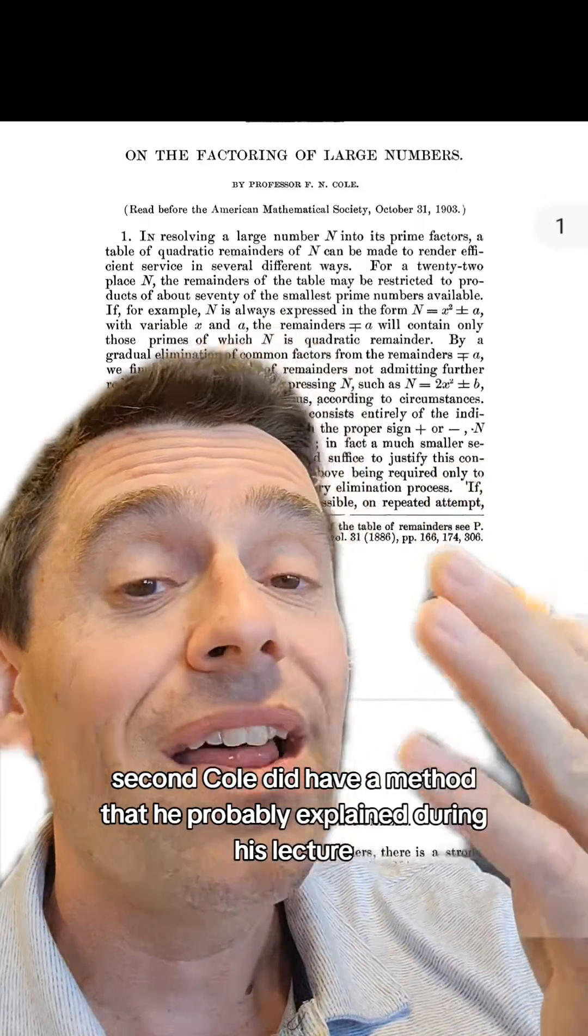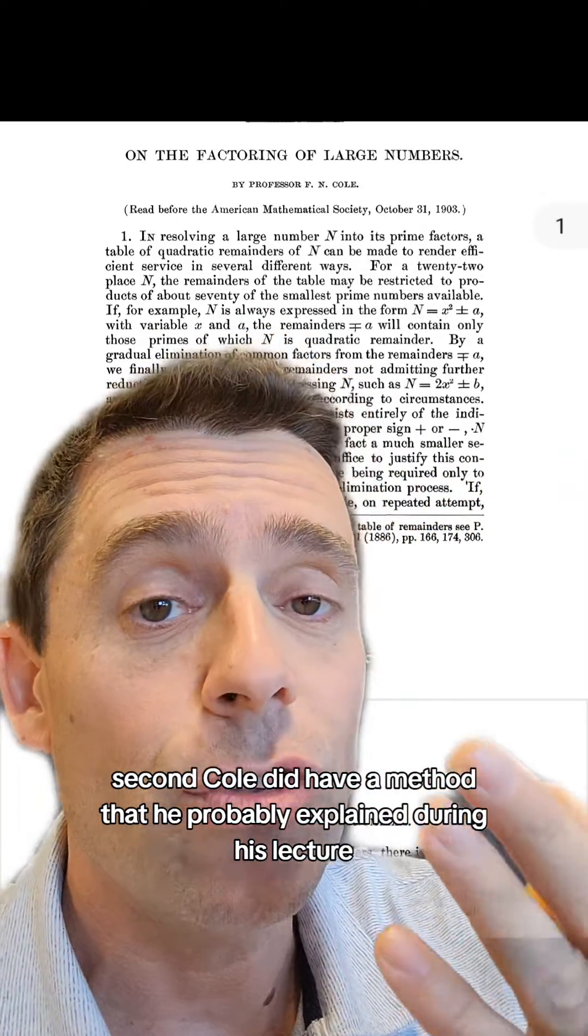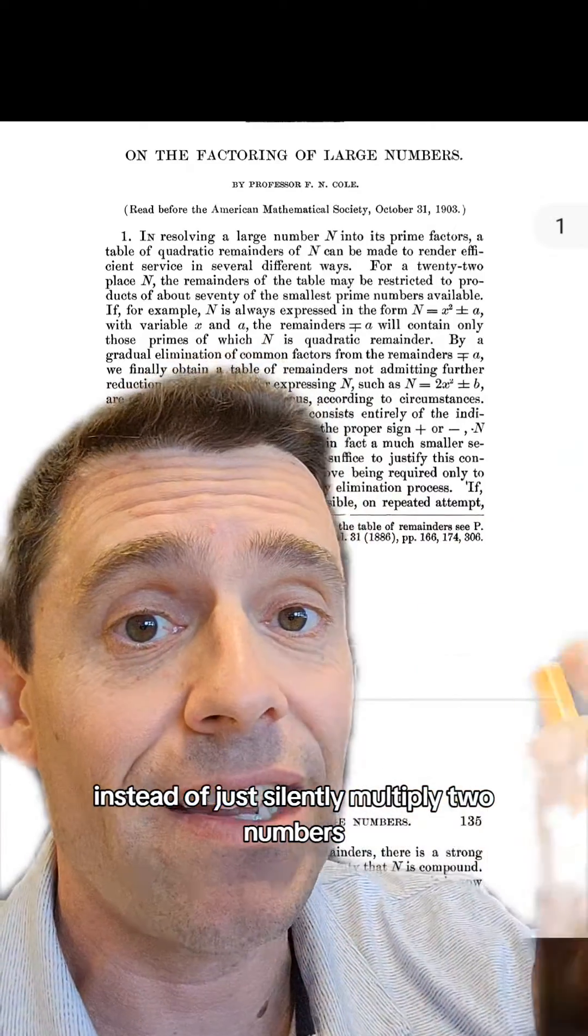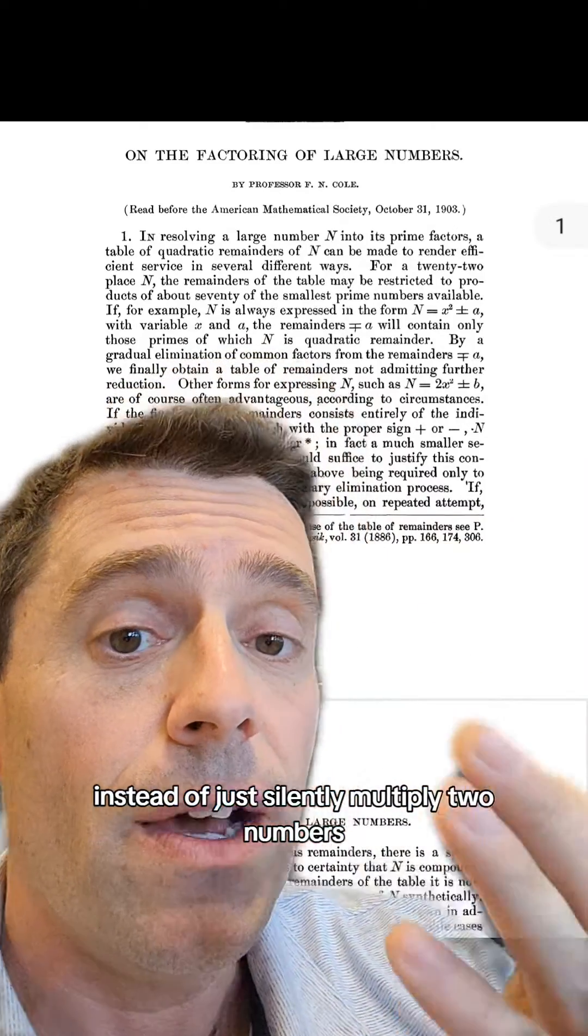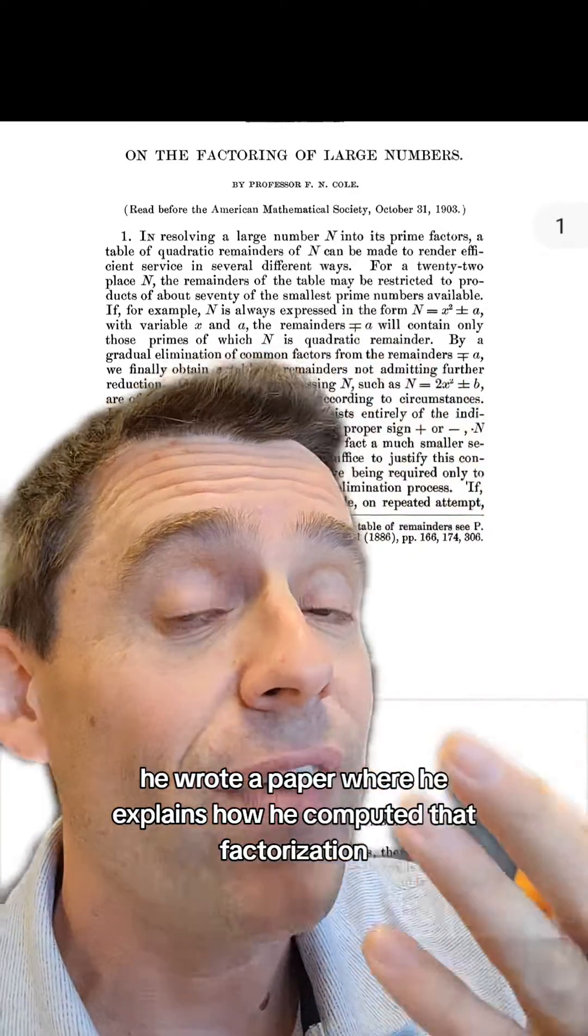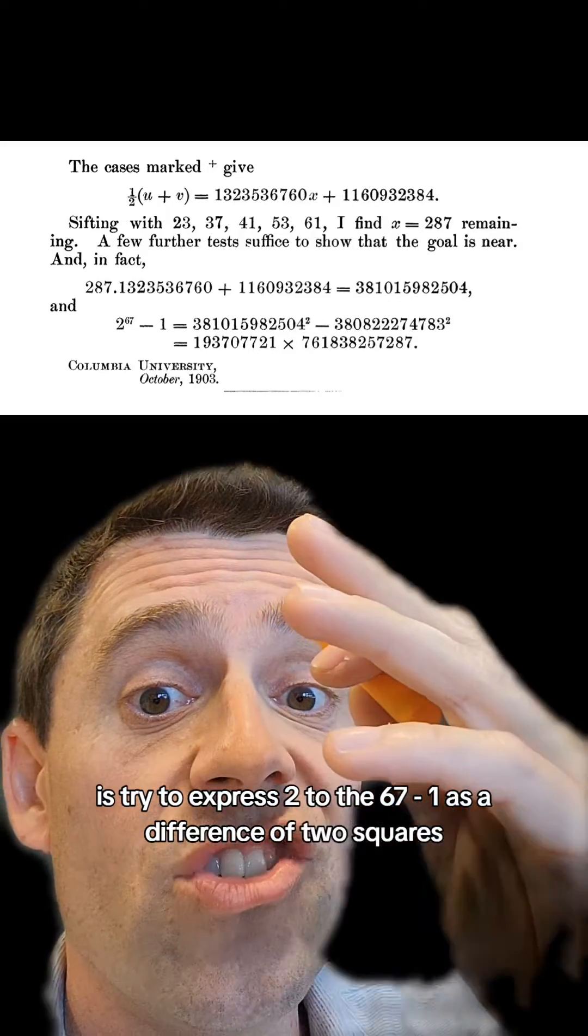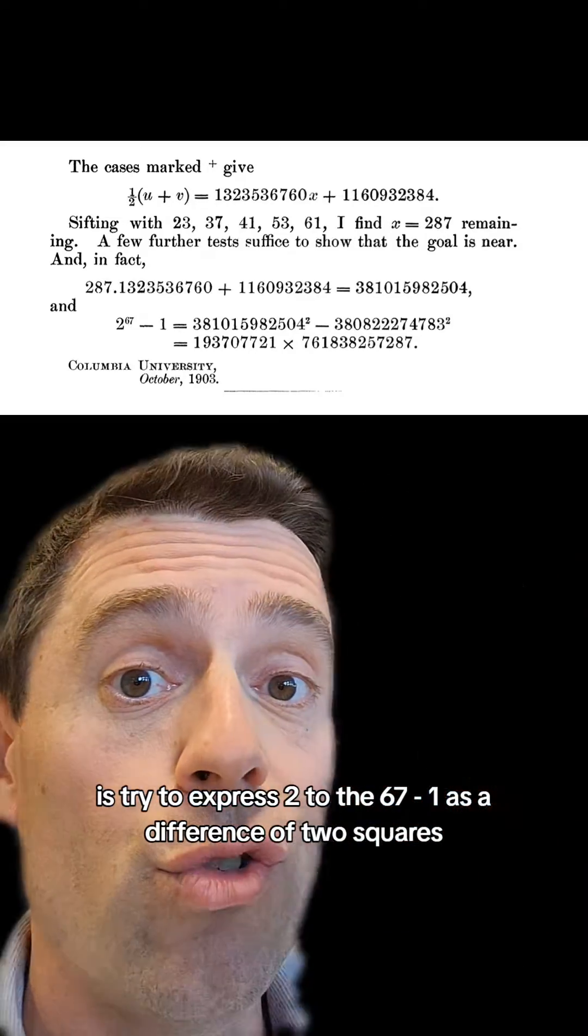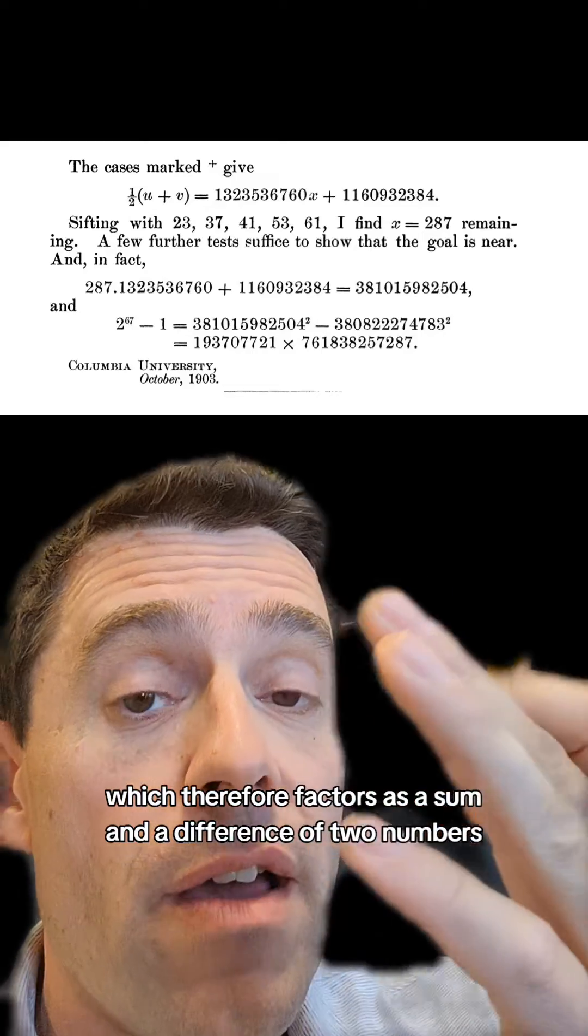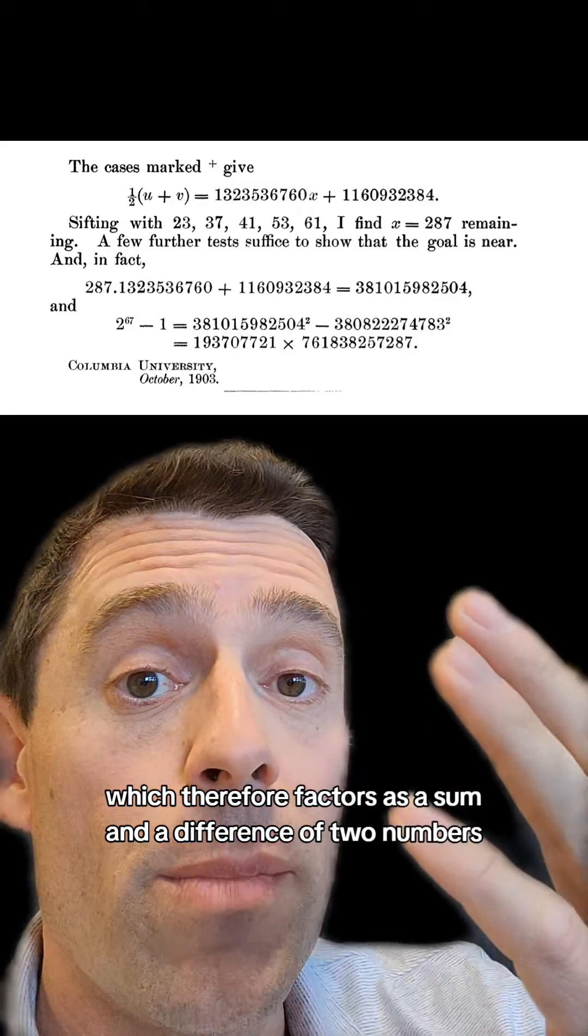Second, Cole did have a method that he probably explained during his lecture instead of just silently multiply two numbers. He wrote a paper where he explains how he computed that factorization. In fact, what Cole does is try to express 2 to the 67 minus 1 as a difference of two squares, which therefore factors as a sum and a difference of two numbers.